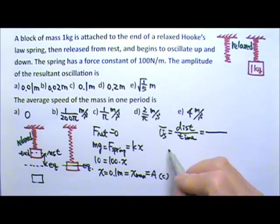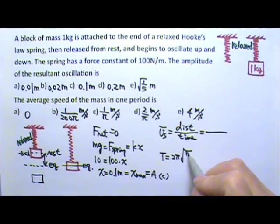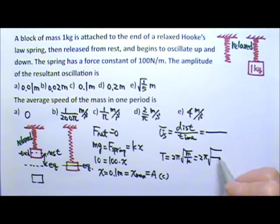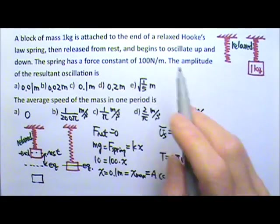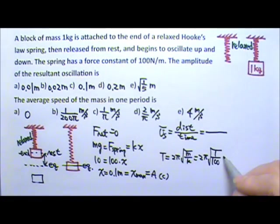So the time is one period. So we need to find the period. For the period, we use 2π√(M/K). So it's 2π√(the mass is 1 kg / the spring constant is 100).